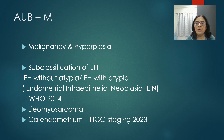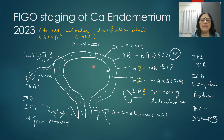The FIGO 2023 staging of carcinoma endometrium: Stage 1 is limited to the body of uterus and is divided into 1A, 1B, and 1C. Stage 1A is further subdivided into 1A1, 1A2, and 1A3. 1A1 is a non-aggressive histopathological type involving only the endometrium or a polyp. 1A2 is non-aggressive with less than 50% myometrial involvement.